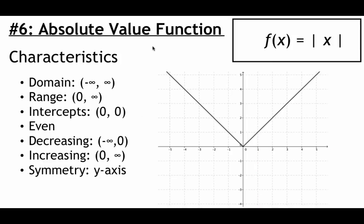Number 6 is an absolute value function, f of x equals the absolute value of x. There are no restrictions on the domain — we can safely plug in any number from negative infinity to positive infinity. The range is all positive numbers from 0 to infinity since absolute value always makes the answer positive. We have x and y intercepts at 0, 0. The absolute value function is an even function with y-axis symmetry, decreasing on negative infinity to 0 and increasing from 0 to infinity.